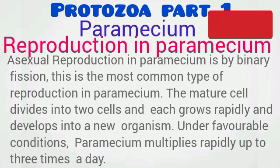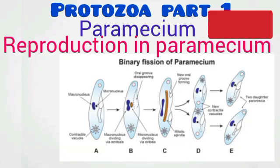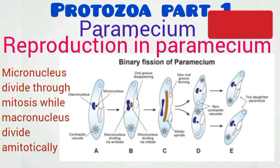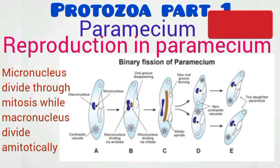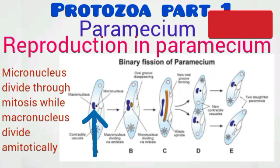Other types of reproduction in Paramecium include cytogamy, autogamy, and endomixis, but in this video we concentrate on binary fission. Binary fission occurs under favorable conditions when food is abundant and temperature is favorable. The process begins with the division of the micronucleus (small nucleus) into two daughter nuclei through the process of mitosis, and these daughter nuclei move towards opposite ends.